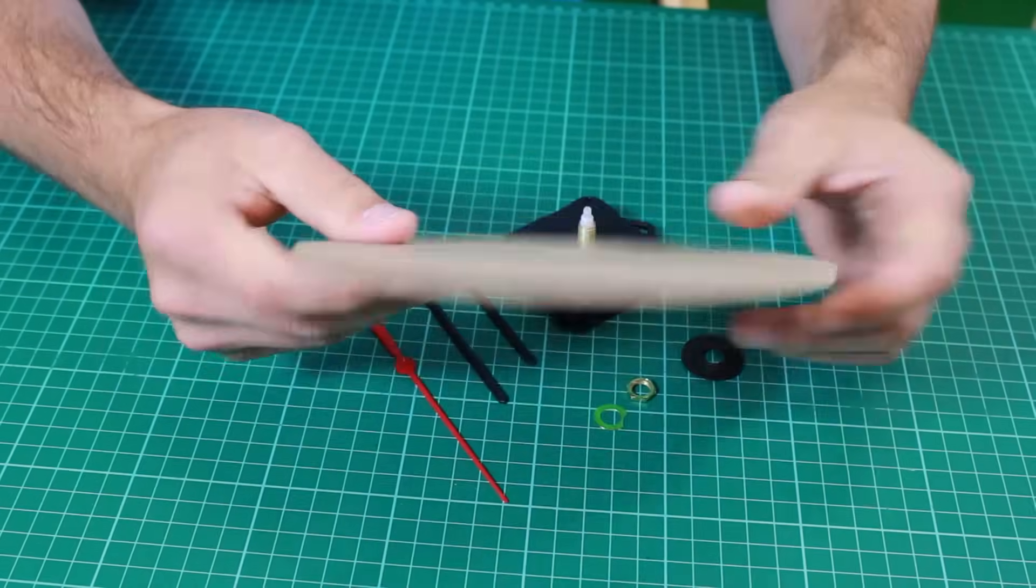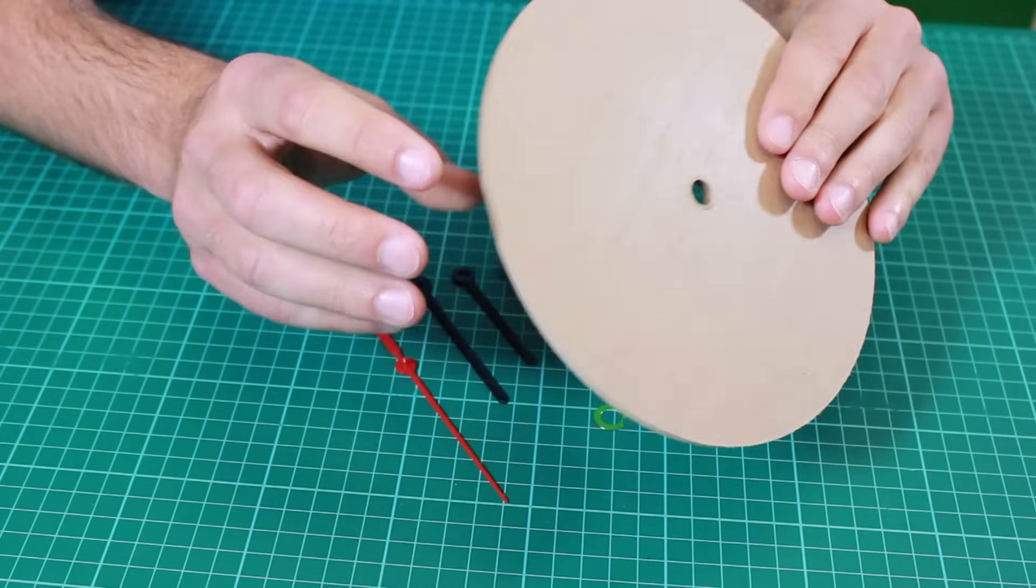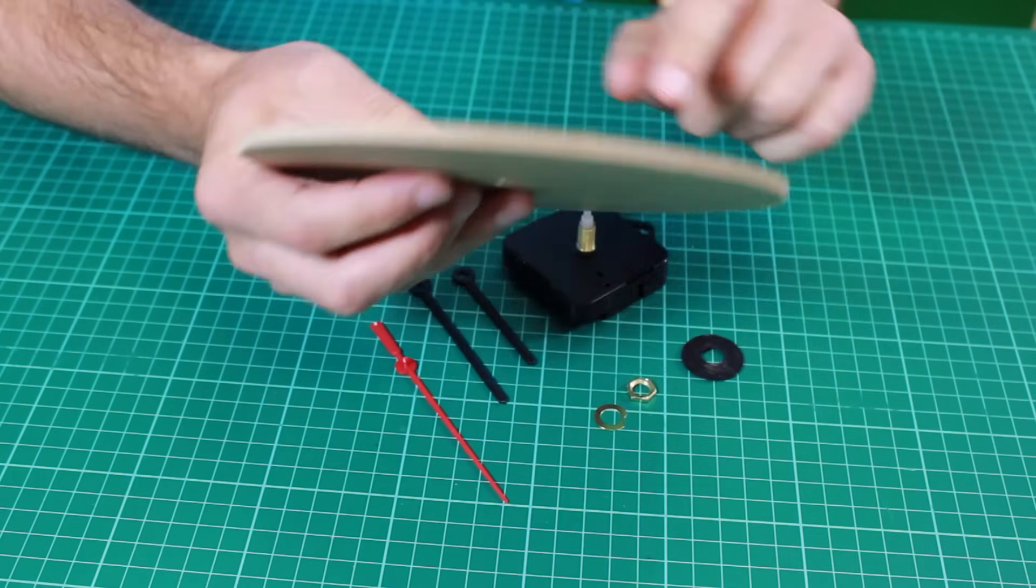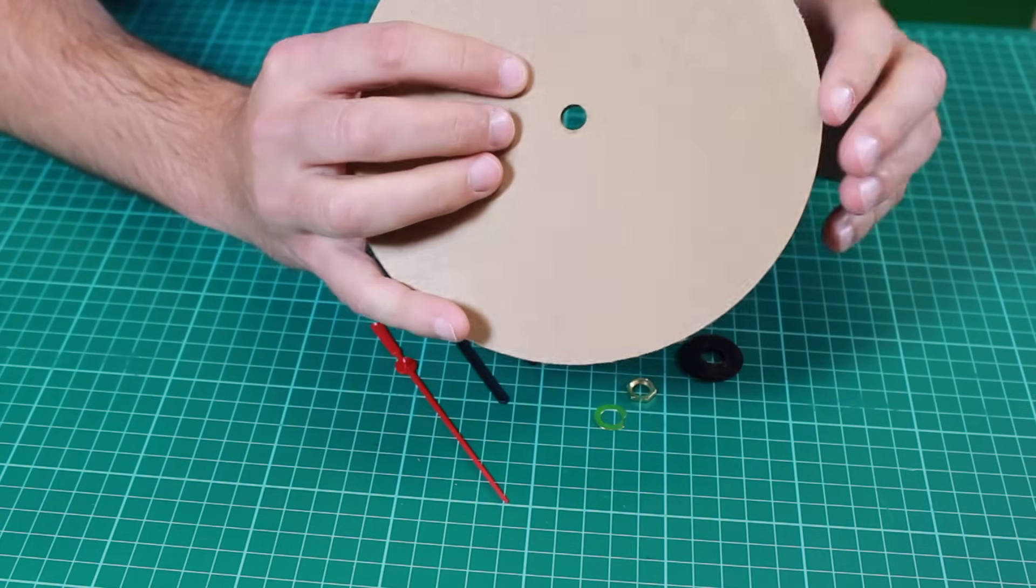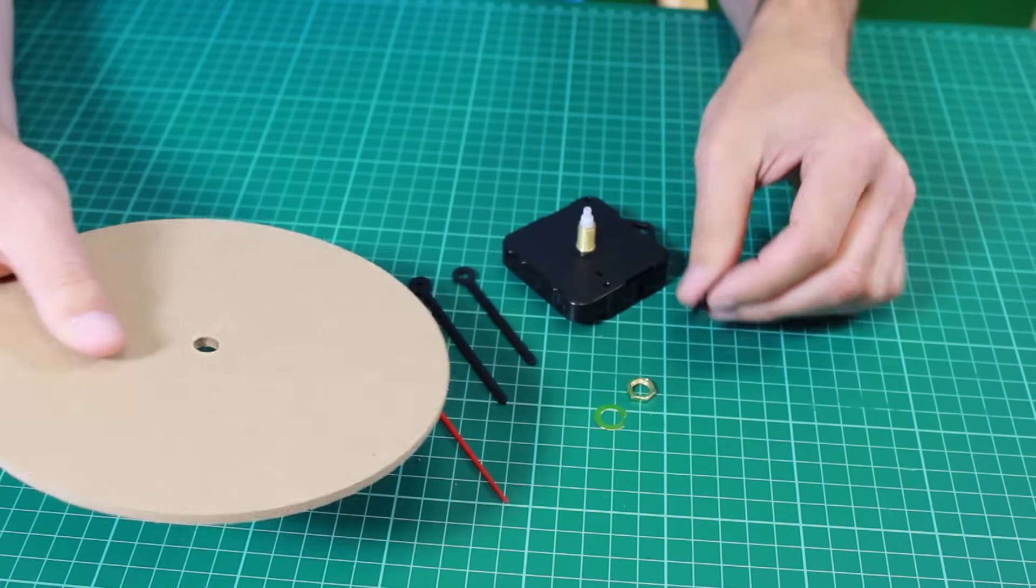So here we have one of our MDF clock faces which we sell. So if we want to use the clock movement and this MDF clock face to make a clock, I'll show you how they go together. As we can see in the centre, we have a hole for the clock movement to go into and fix onto.